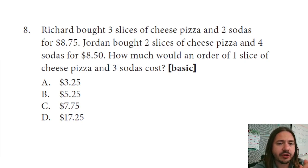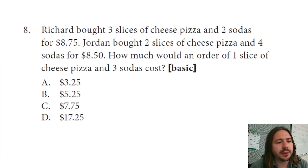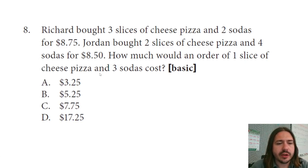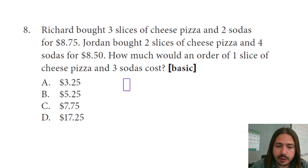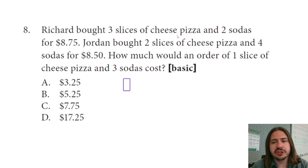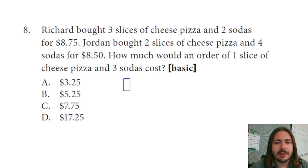Okay, this is a pretty tricky problem — this might be the hardest one on here. What we need to do is write an equation for everything Richard bought and then write an equation for everything Jordan bought. We'll use that system of equations to figure out the cost per cheese pizza and the cost per soda, and then we can answer the question.